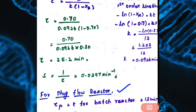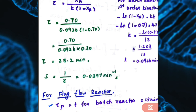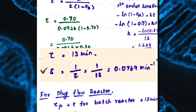Next, we will calculate space time for the plug flow reactor. The performance equation for plug flow reactor and batch reactors are identical for a constant volume system, so space time for plug flow reactor equals the time for the batch reactor. From the given data, 70% of reactant A is converted in 13 minutes in the batch reactor, so space time for PFR = 13 minutes. Therefore, space velocity = 1/13 = 0.0769 min⁻¹.